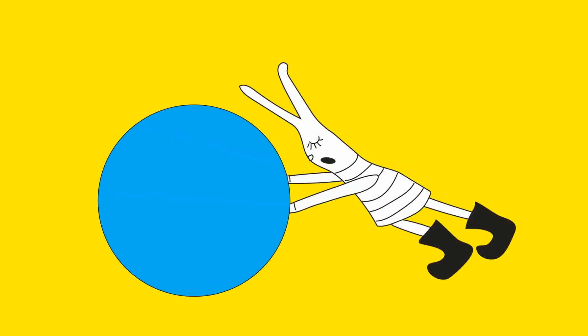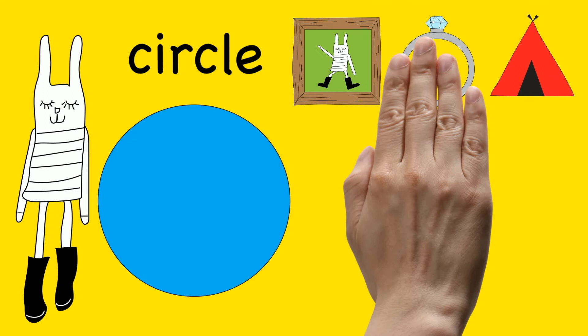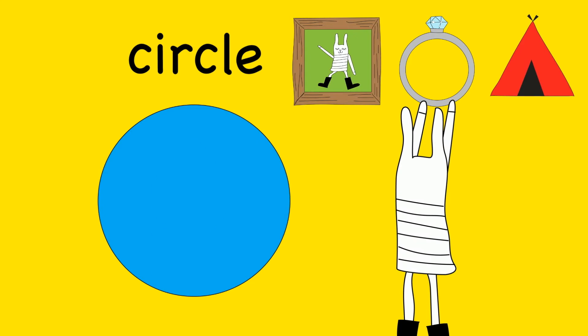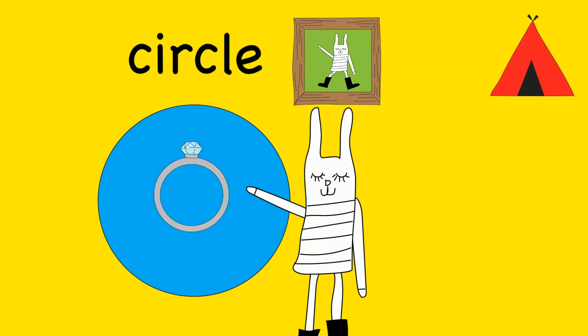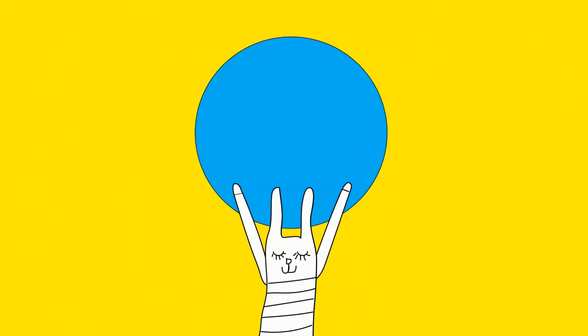I see a circle. Can you show us the object that is shaped like a circle? A ring is shaped like a circle. Circle.